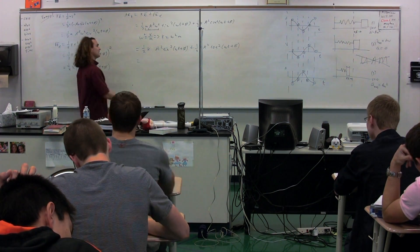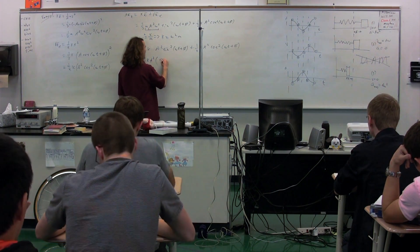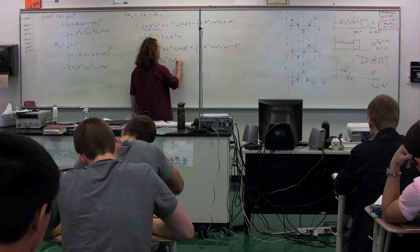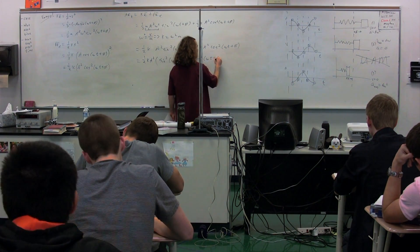So what we end up with is one-half times k A squared times a quantity sine squared omega t plus phi, plus cosine squared omega t plus phi.